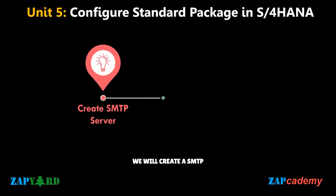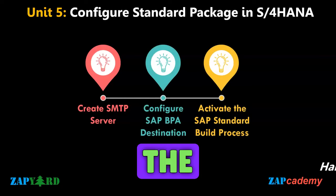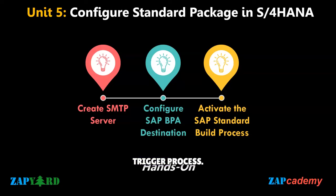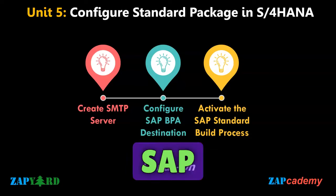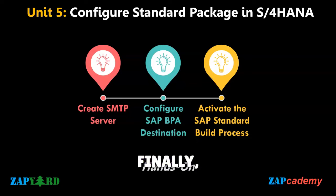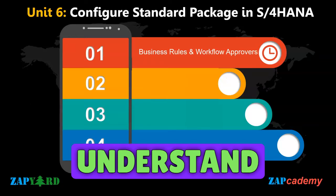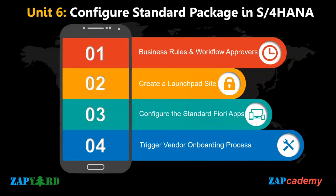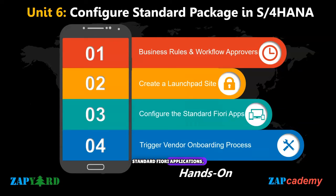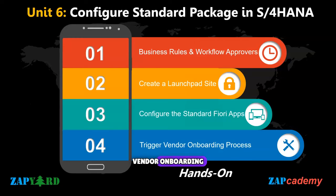Next, we will create an SMTP server and test the SMTP server email trigger process. We will also configure the SAP BPA destination and activate the SAP standard build process. Finally, we will review the workflow details and activate it. We will then understand the business rules, configure workflow approvers, and create a launchpad site in Work Zone. We will also configure the standard Fiori application's inbox and vendor onboarding in the Work Zone site.